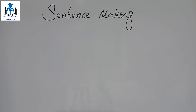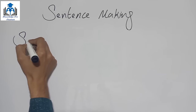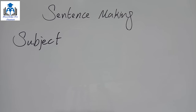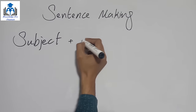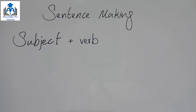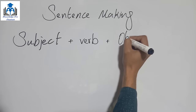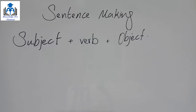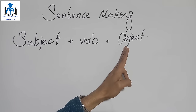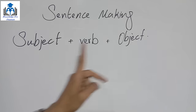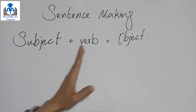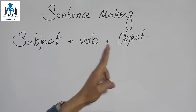Let's start — how to make a sentence. For making a sentence, what do we need? First of all we need a subject, the second thing is a verb, and the third thing would be an object. This is the order: first we write the subject, then the verb, and then the object.